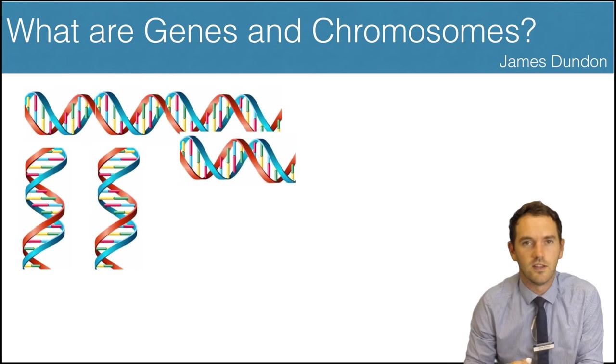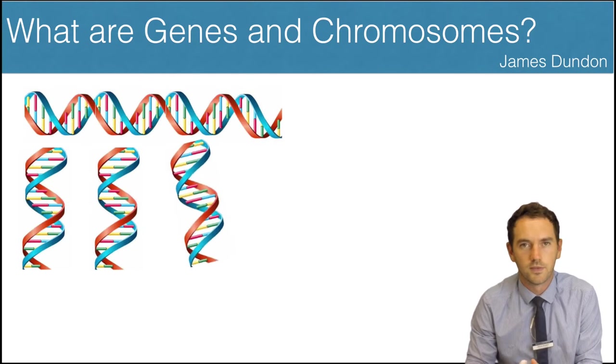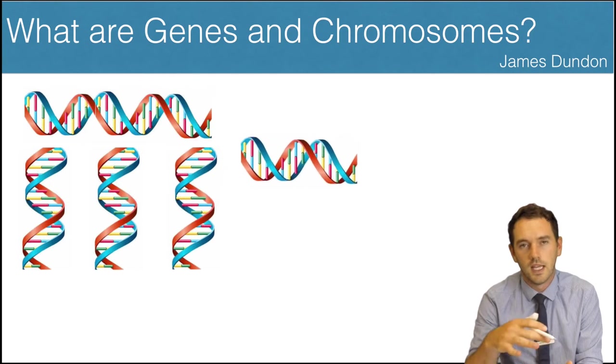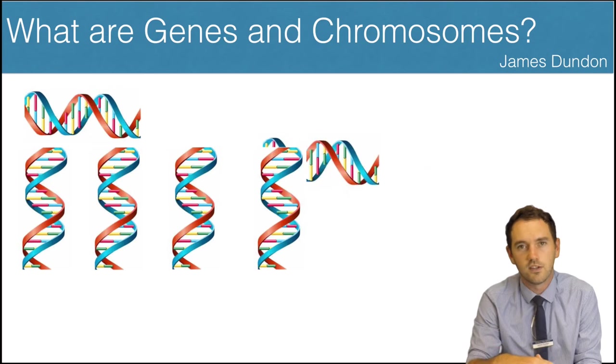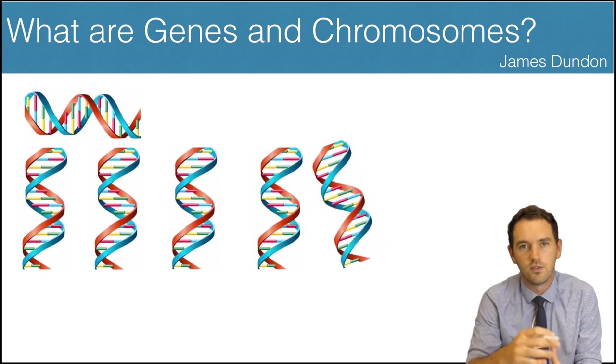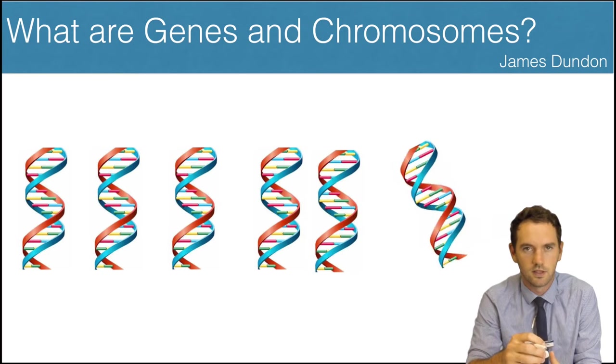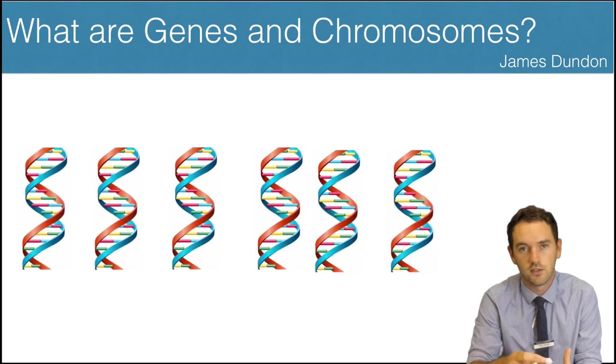Hopefully you can see those on the screen. So our long piece of DNA is actually broken up into 23 chunks, and each of those chunks is called a chromosome.